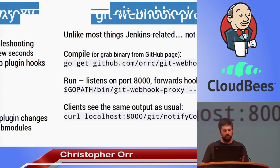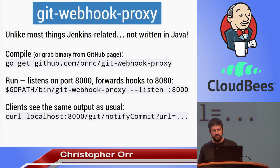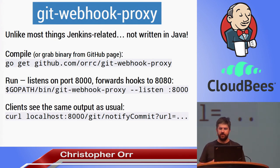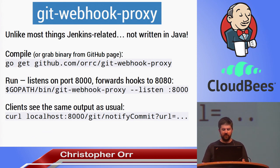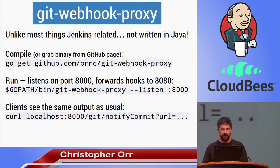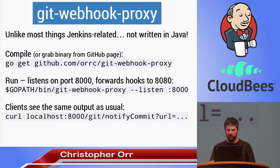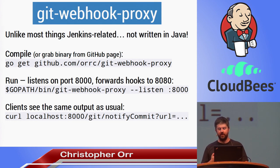One last thing: unlike most things in Jenkins, it's not a plugin and not written in Java. It's a pretty simple project written in Go. If you want to try it out, you just need one single command line - go get whatever - which downloads, compiles, and installs it for you. Then you just run it with --listen port 8000, for example. You tell GitHub you're listening on port 8000, and if you go to localhost:8000/git/notifyCommit - a completely normal Jenkins URL - you'll get the normal output from Jenkins, but in the background it will have mirrored your Git repository for you.